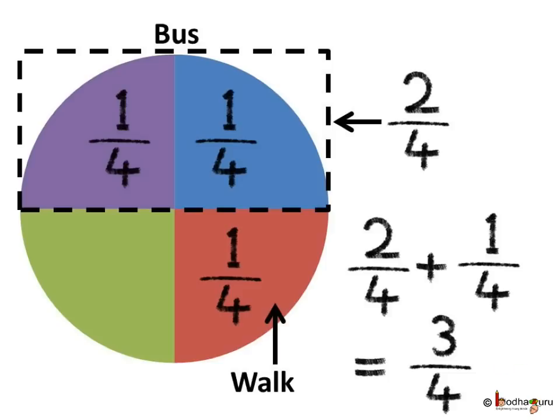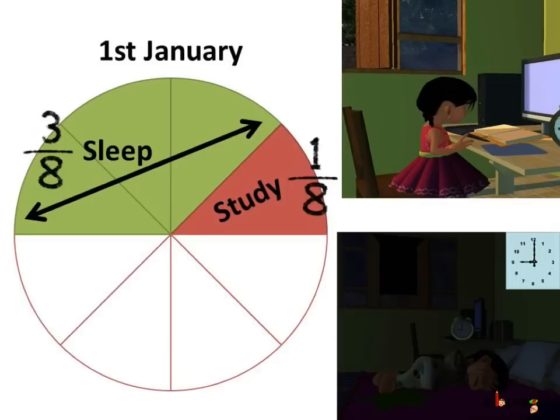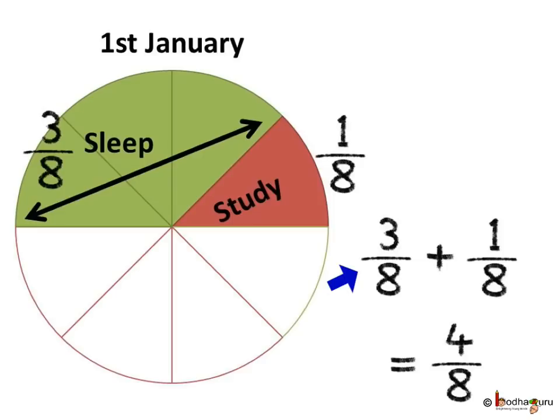Aman travelled a distance equal to 3 by 4 km to see the circus. Let us take another example. On 1st January, Khushi slept 3 by 8 of the day and studied for one-eighth part of the day. What total part of the day did she sleep and study? 3 by 8 plus 1 by 8 is equal to 4 by 8.